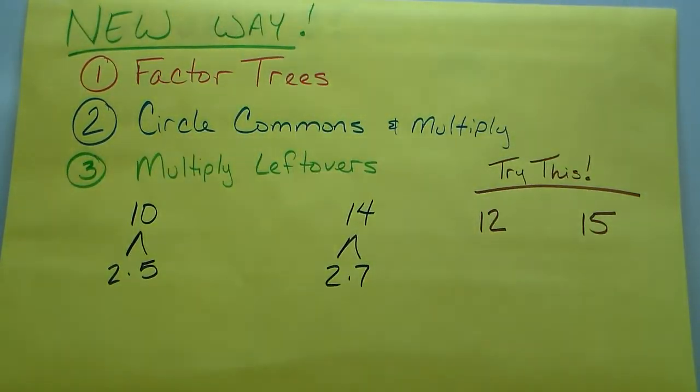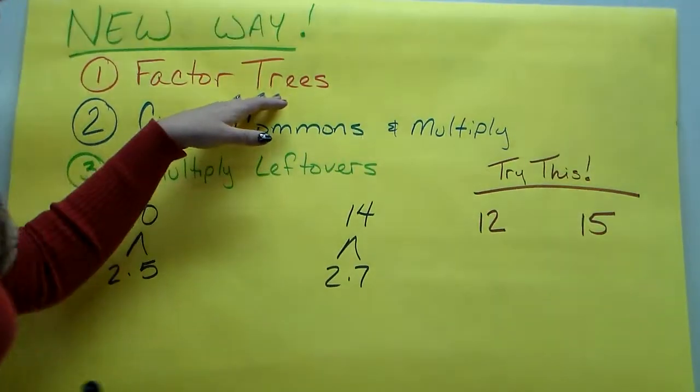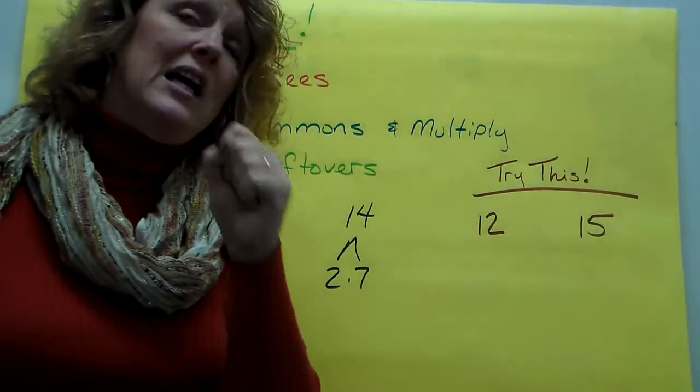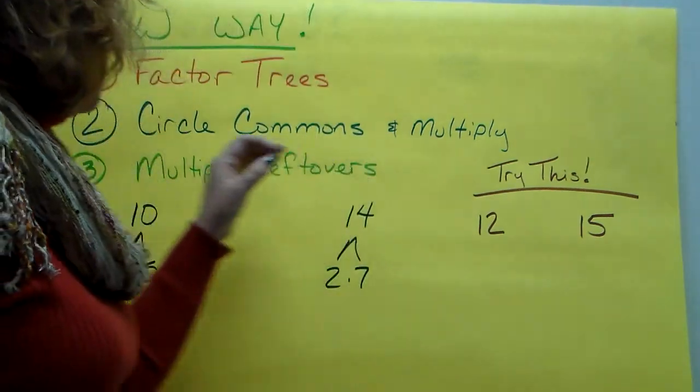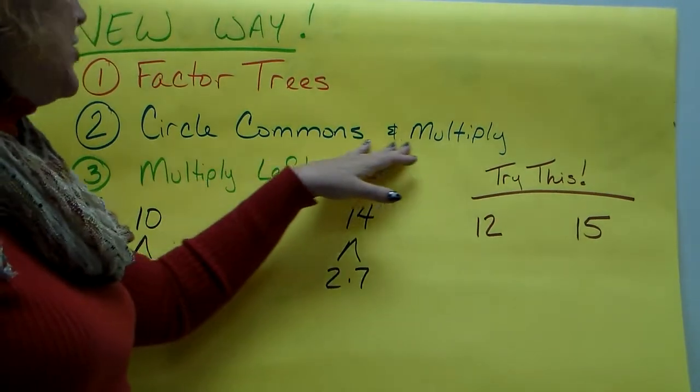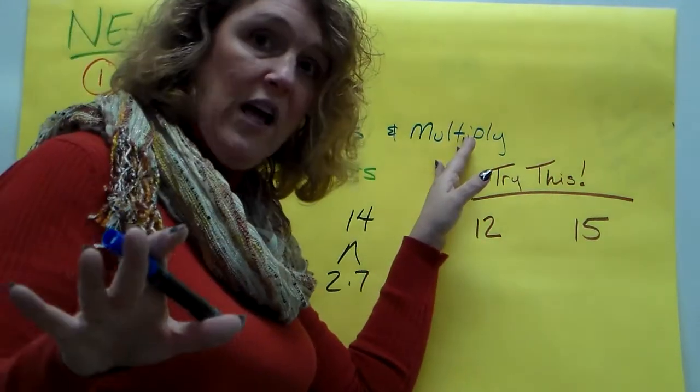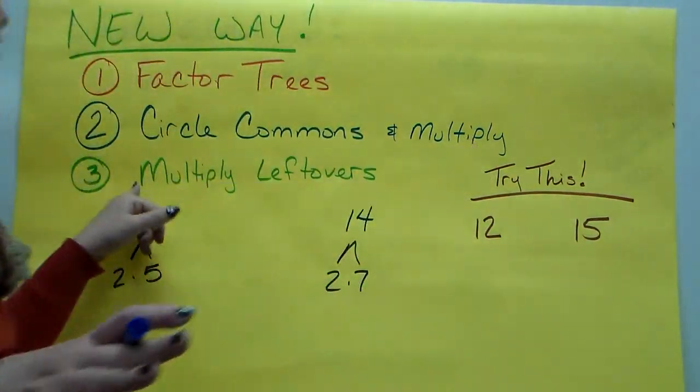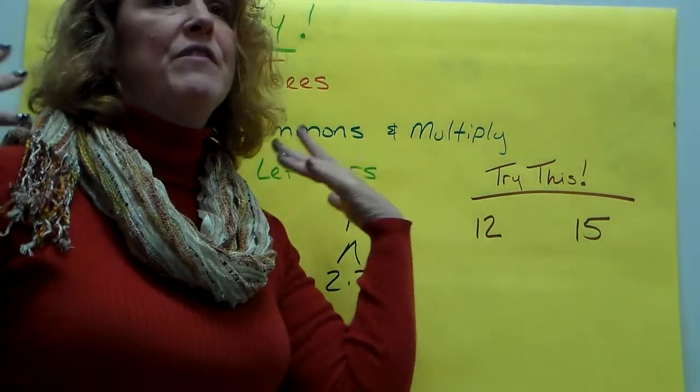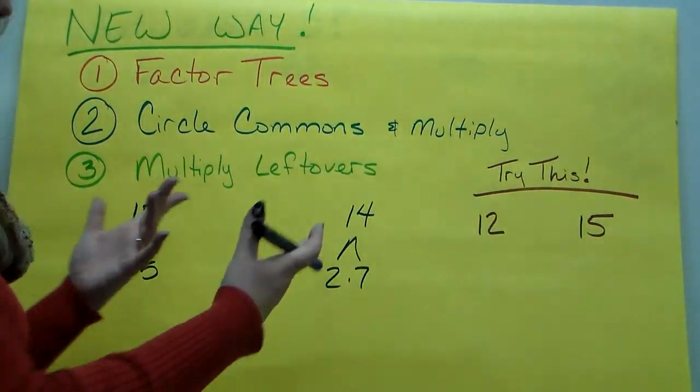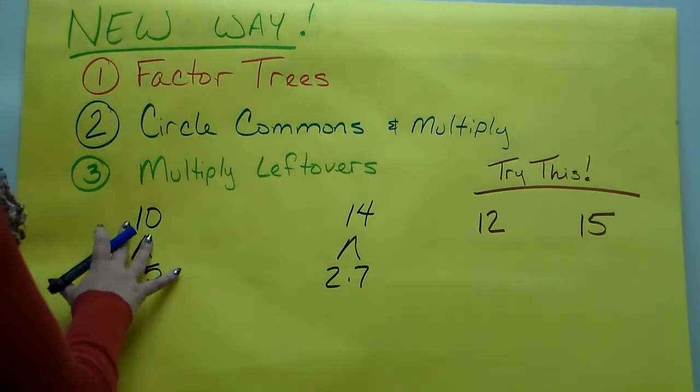Well, we have factor trees now. We don't have to do it that way anymore. Now, we're going to build factor trees. And this looks a lot like greatest common factor, so I don't want you to get it confused. We're going to start by circling the common ones and multiplying those together just like greatest common factor. But then we're also going to multiply the leftovers because we have to get a number that's bigger than these two numbers. So we start out with factor trees.